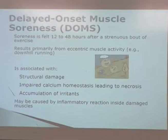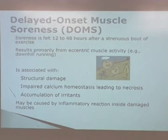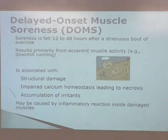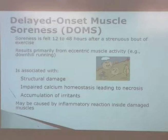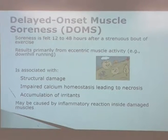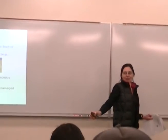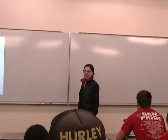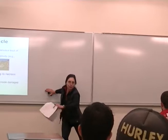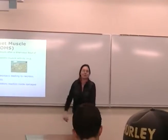Delayed onset muscle soreness is that feeling you get 24 to 48 hours — the following day or two days after. You have that training session, really push it hard in the gym, lift a little more weight, and the next morning you wake up and you're just a little bit stiff. Then the following day you wake up and you can't move your arms, can't get your shirt on anymore. Or you do a really heavy leg day and you can't sit down, and once you're there you can't get back up again. That's delayed onset muscle soreness.